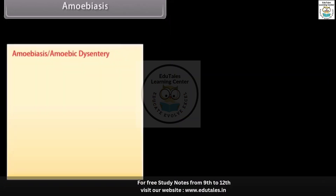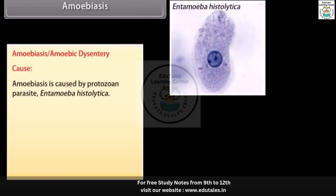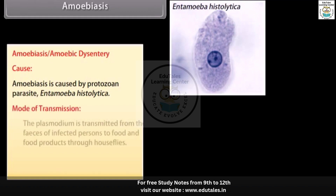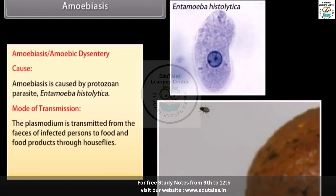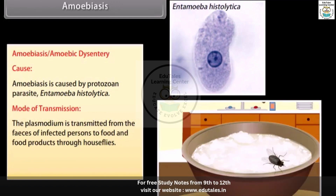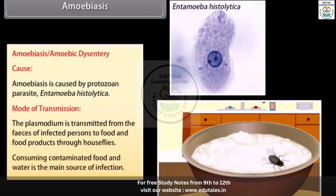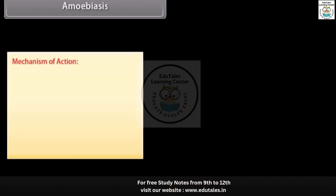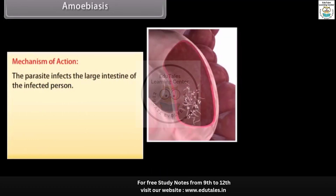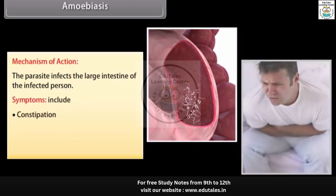Amoebiasis, or amoebic dysentery, is caused by the protozoan parasite Entamoeba histolytica. It is transmitted from the faeces of infected persons to food and food products through houseflies. Consuming contaminated food and water is the main source of infection. The parasite infects the large intestine. Symptoms include constipation, abdominal pain and cramps, and stool with mucus and blood.